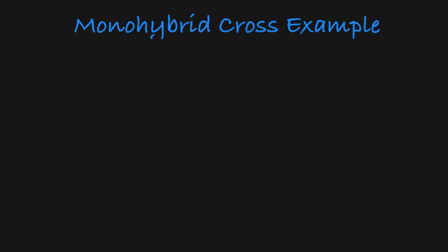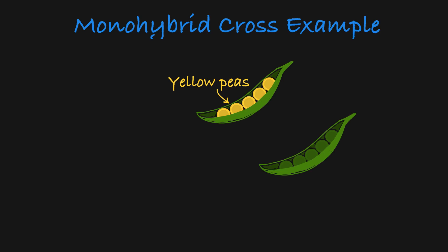Let's take a look at a classic Mendelian example using pea plants. Pea plants have two possible pea colors, yellow and green, resulting from two different alleles.